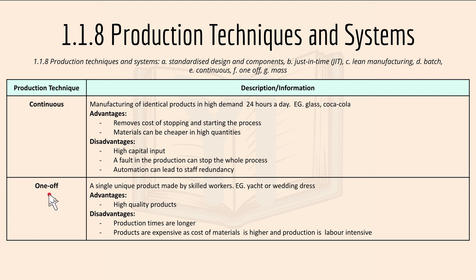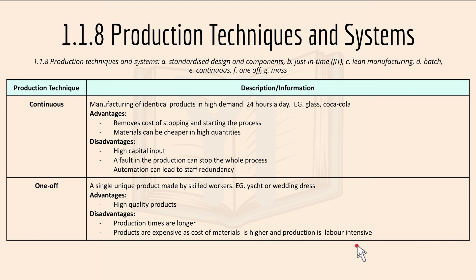One-off production is where a single unit product is made by skilled workers — like a yacht or a wedding dress. An advantage is high quality products, as everyone is focused on just that one product. Disadvantages include longer production times, expensive products as the cost of material is higher, and production is labour intensive, meaning it requires a large number of workers.